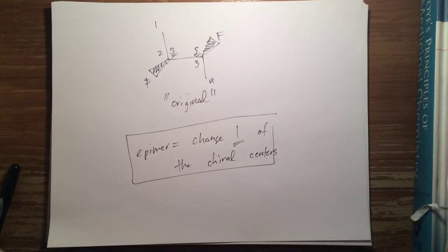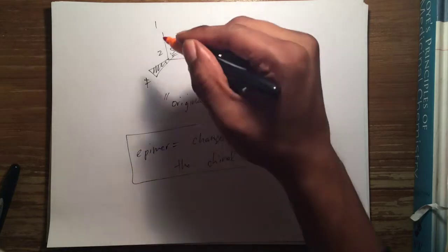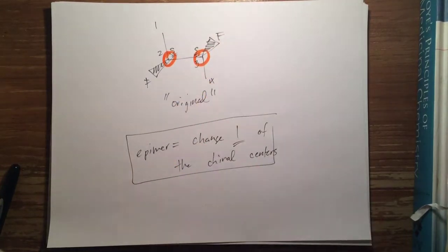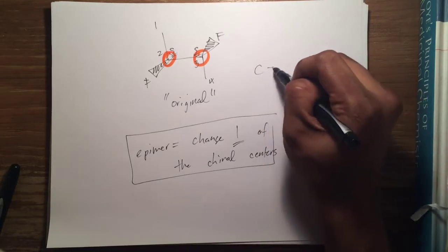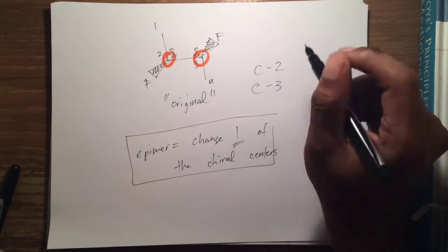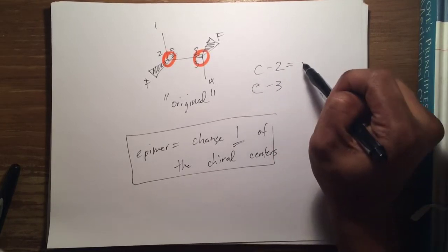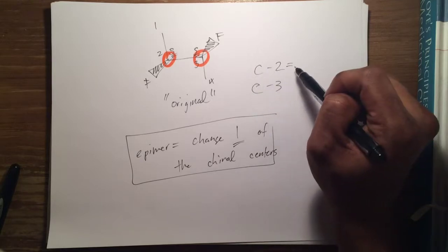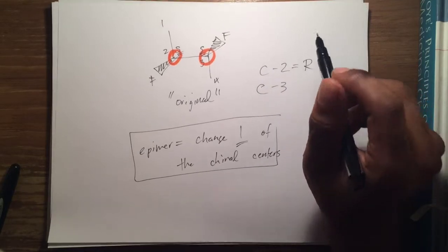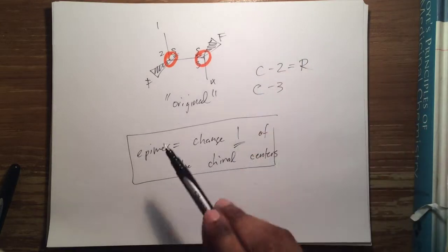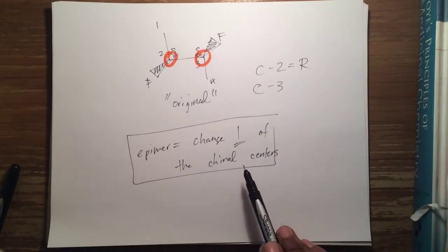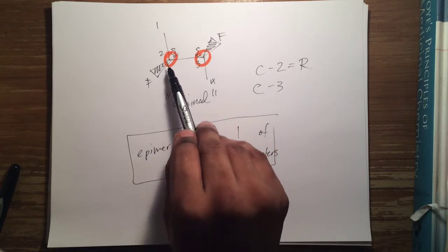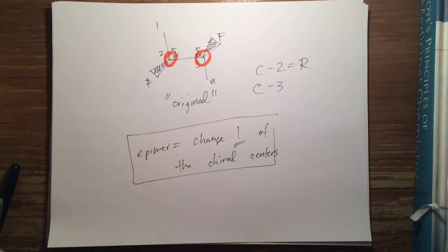Now let's actually apply that knowledge. In our original molecule, we had two chirality centers at two and three. We can draw two epimers from this molecule — we can draw what they call a C2 epimer or we can draw a C3 epimer. A C2 epimer means at the C2 in this molecule, instead of it being S, we're going to change it to R. Epimer tells us we can only change one of the chirality centers, so you have to pick either two or three and change it — but only one.